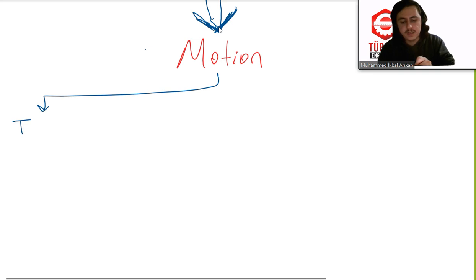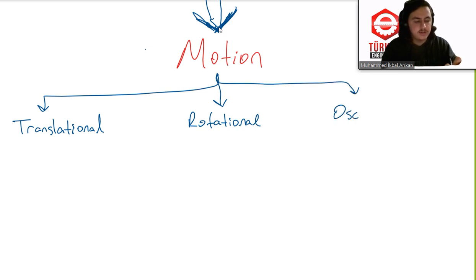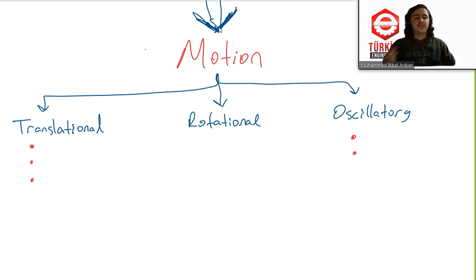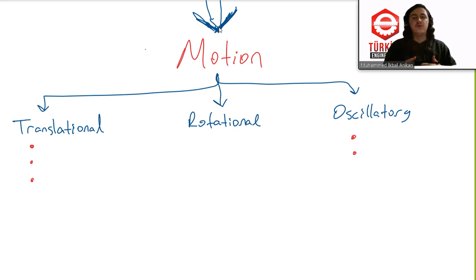Motion can be translational, rotational, or oscillatory. So we have three types of motion. In translational motion, your initial position will change — you are moving in space from an initial position to a final position, and there is a difference between these two positions. So you are translating and making translational motion.